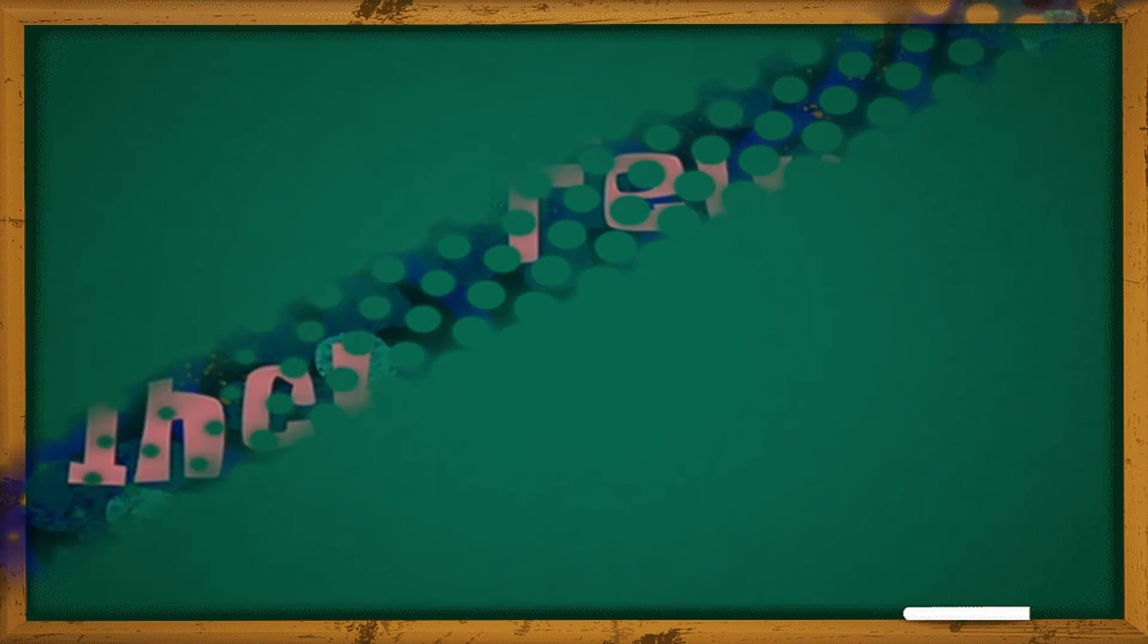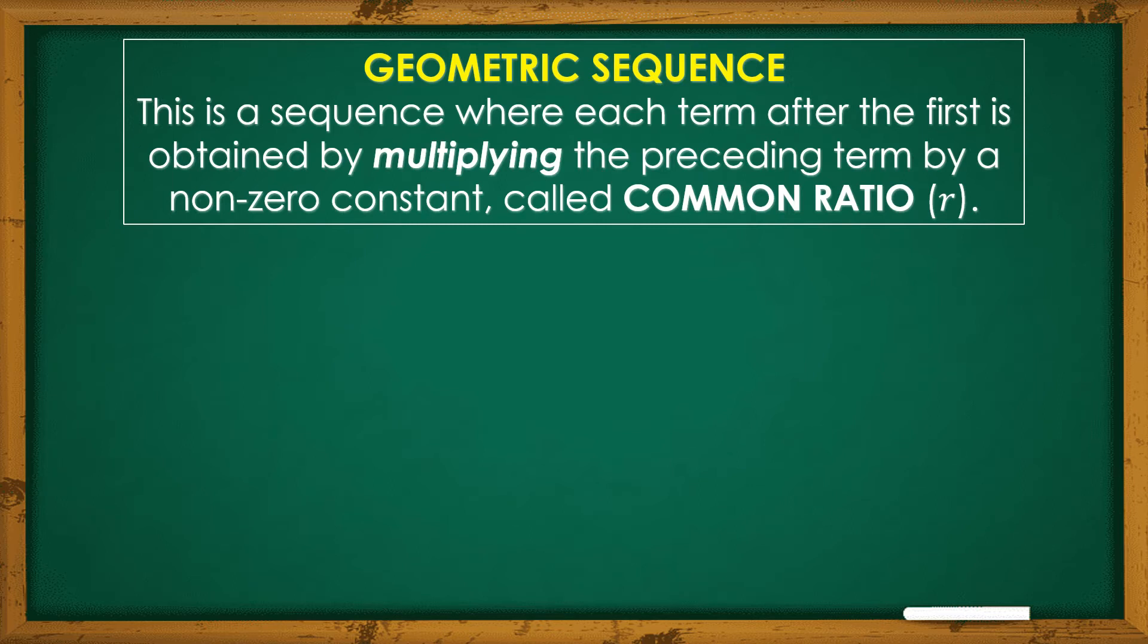In this module, we will be particular with the next kind of sequence. This is geometric sequence. This is a sequence where each term after the first is obtained by multiplying the preceding term by a non-zero constant called common ratio, or r.